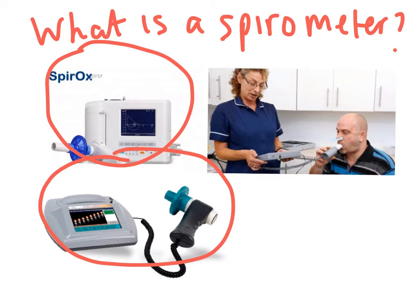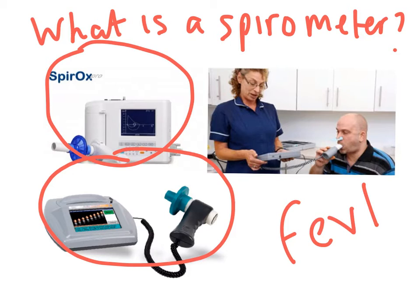We also need to understand how a spirometer is used and how it measures. A spirometer measures the amount of air or the speed of air that can be inhaled or exhaled. The most common measurement used is forced expiratory volume — basically how much air you can breathe out in one second — measured as FEV1. As you can see, this gentleman here is being tested by a senior nurse.